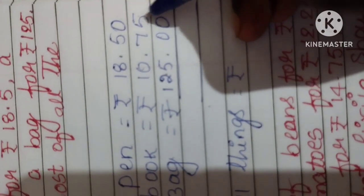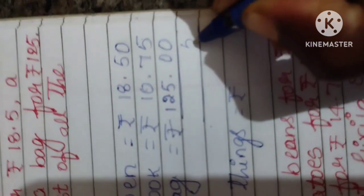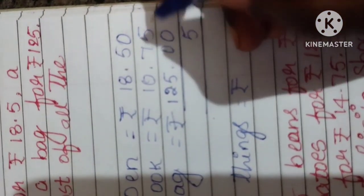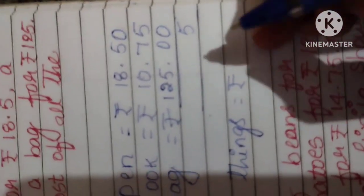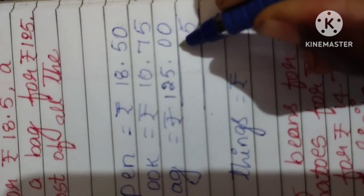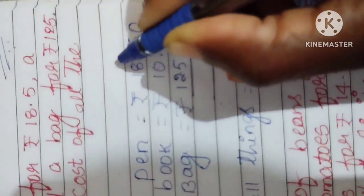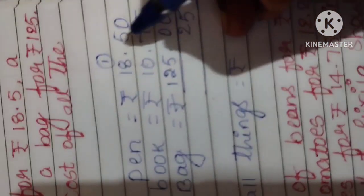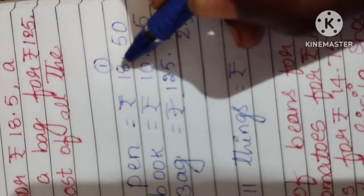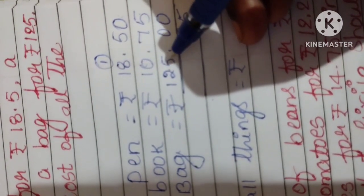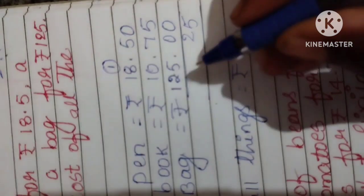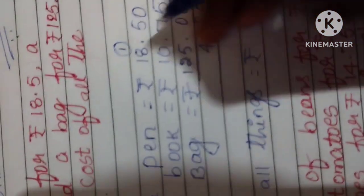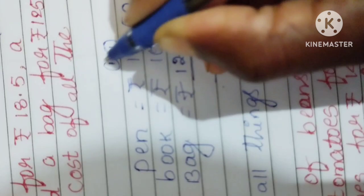0 plus 5 is 5, 5 plus 0 is 5 only. Next, 7 plus 5 is 12. 1 goes to carry.